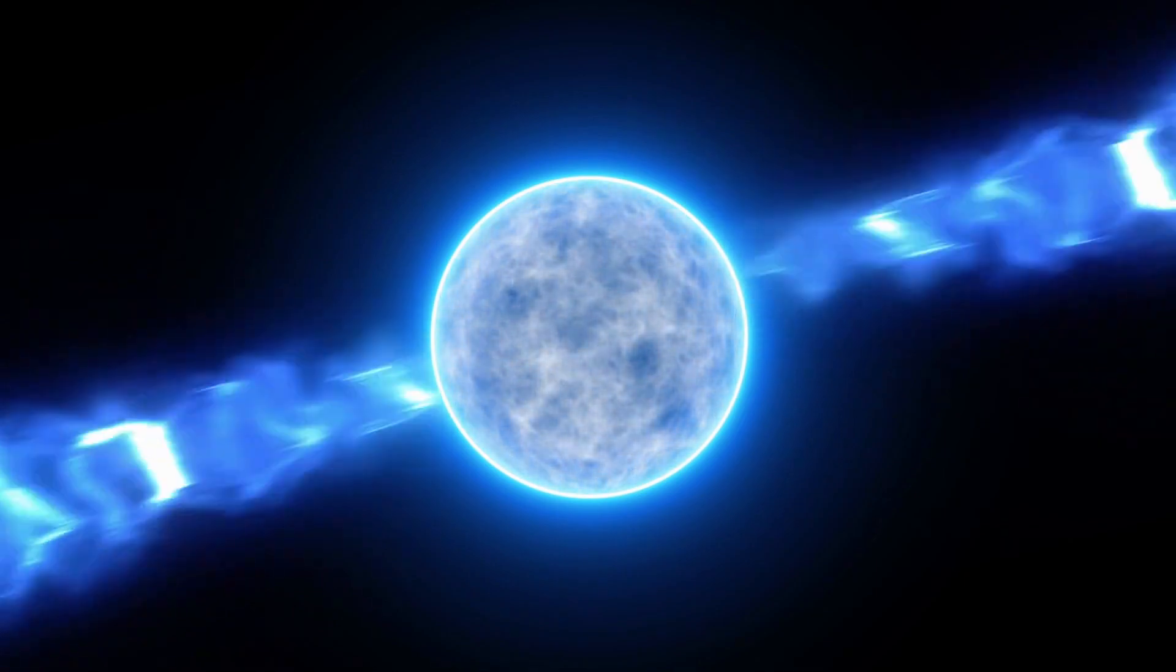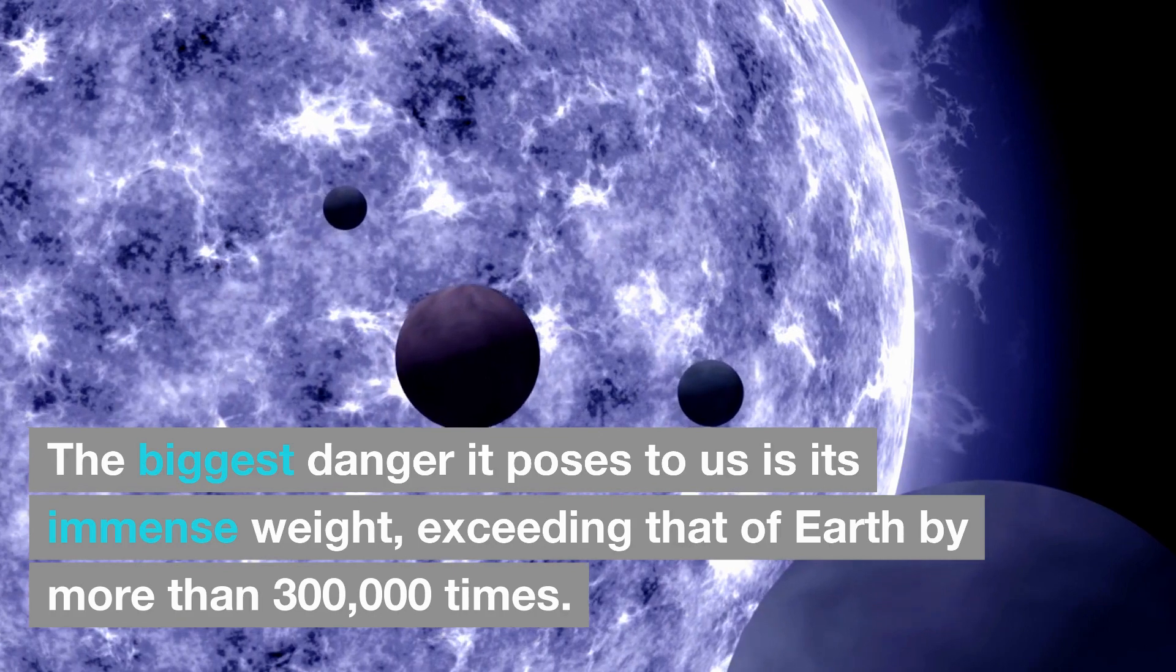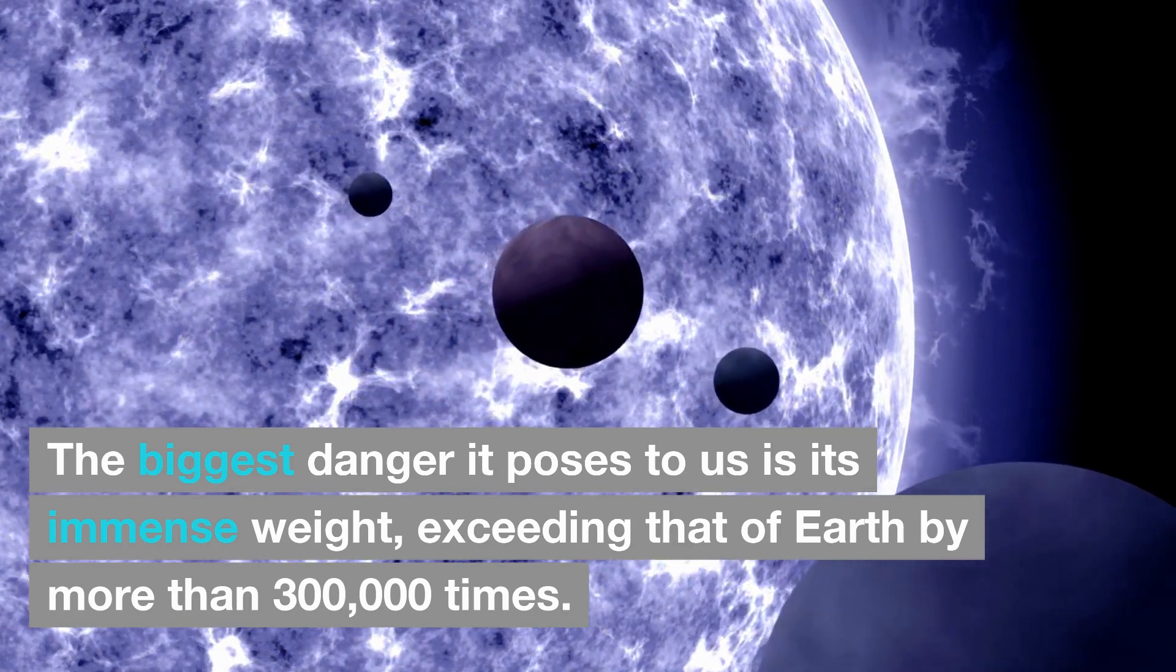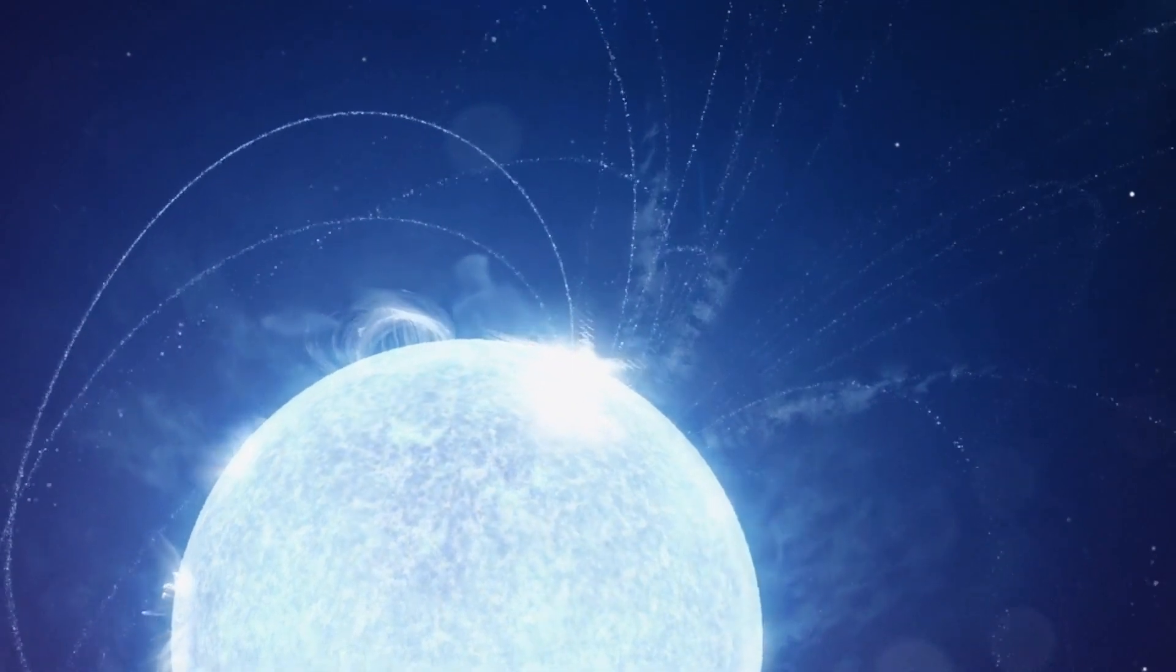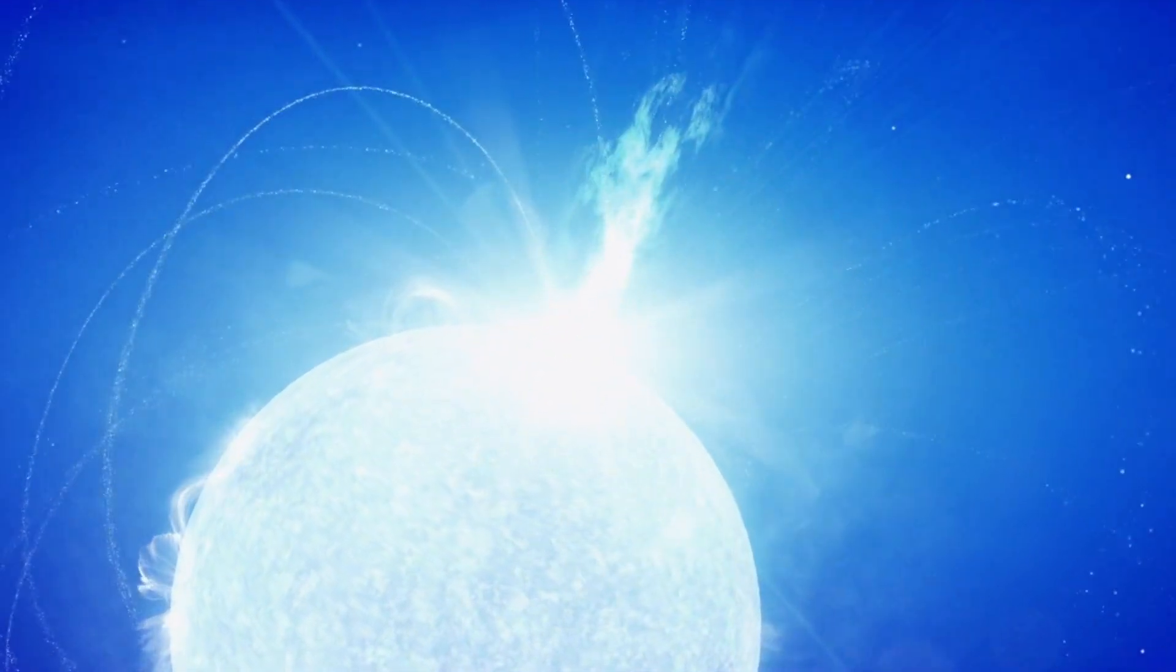How will it affect Earth and other planets? The biggest danger it poses to us is its immense weight, exceeding that of Earth by more than 300,000 times. Due to its enormous mass and gravity, the neutron star can disrupt the orbits of all celestial objects.